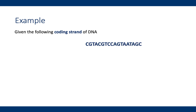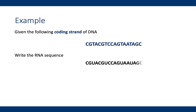Here is an example. Given the following coding strand of DNA, write the RNA sequence. Pause the video to try it out. And here is the result: the RNA sequence is the same as that of the coding DNA, but uses uracil instead of thymine.